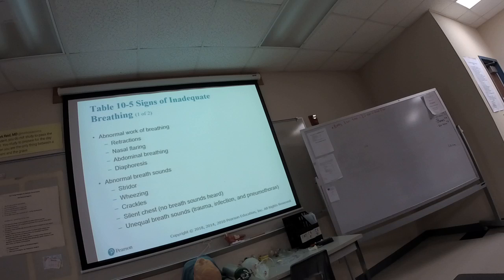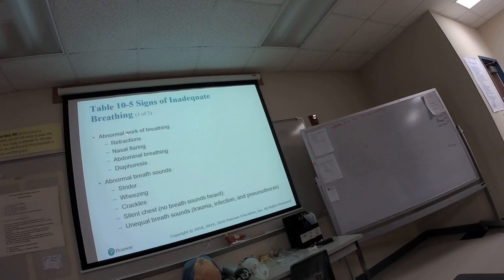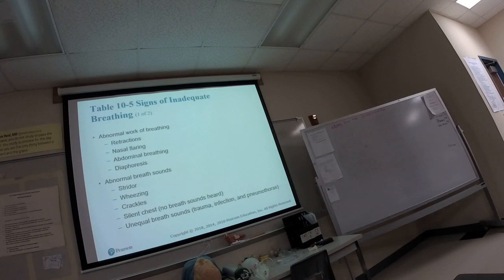Signs of abnormal work of breathing include retractions in the neck, nasal flaring, and belly breathing. Diaphoresis — sweating — is also a sign. Abnormal breath sounds include stridor, which is an upper respiratory sound; wheezing from bronchial constriction; crackles or ronchi from fluid; and a silent chest — no breath sounds at all.